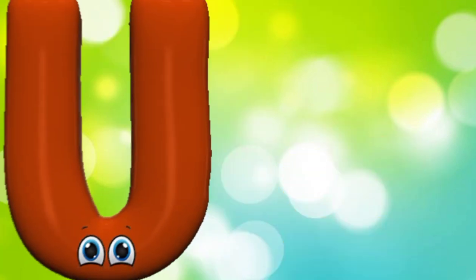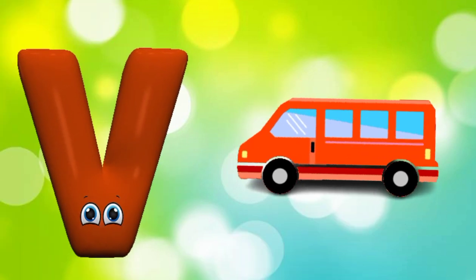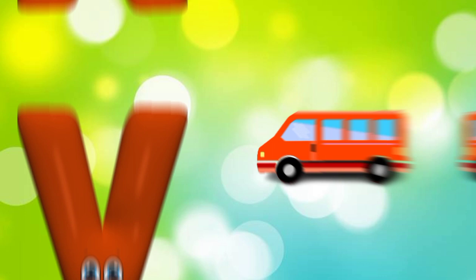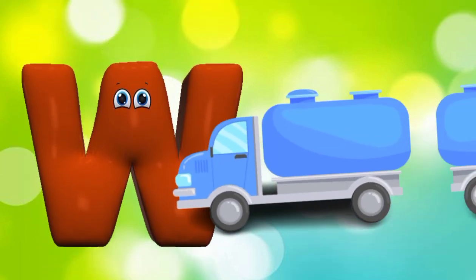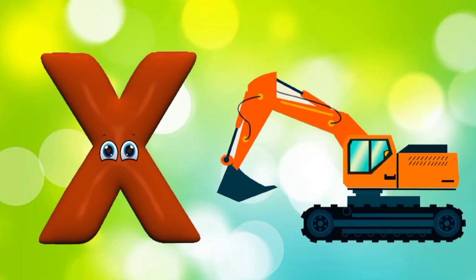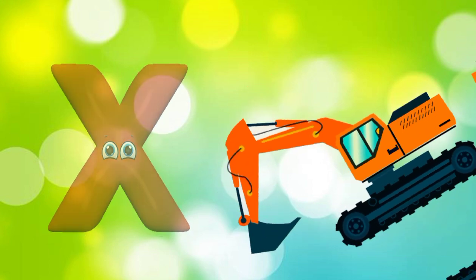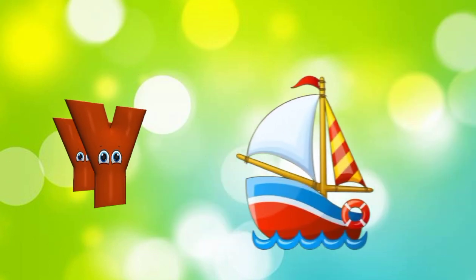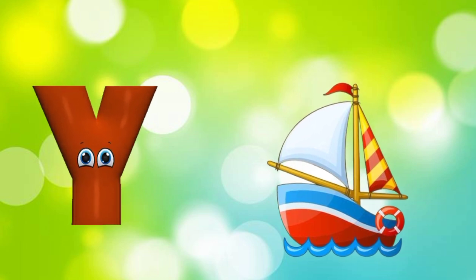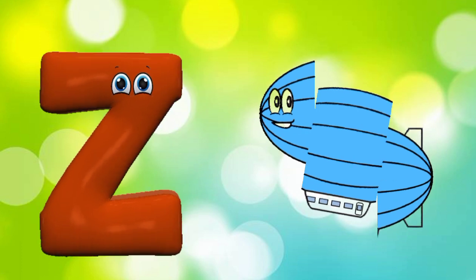U is for unicycle, unicycle. V is for van, V, v, van. W is for water tanker truck, W, w, water tanker truck. X is for excavator, excavator. Y is for yacht, Y, y, yacht. Z is for zeppelin, Z, z, zeppelin.